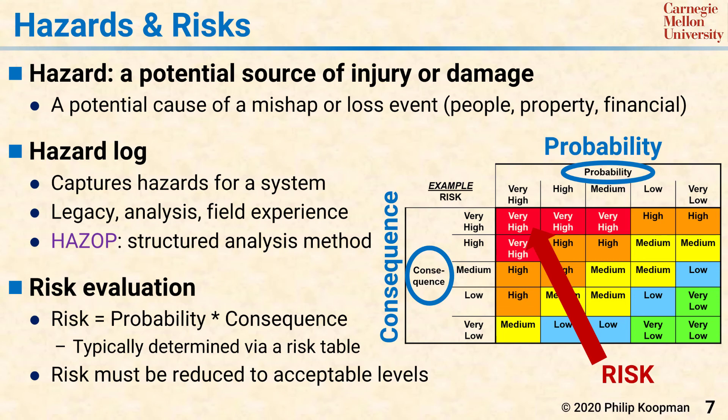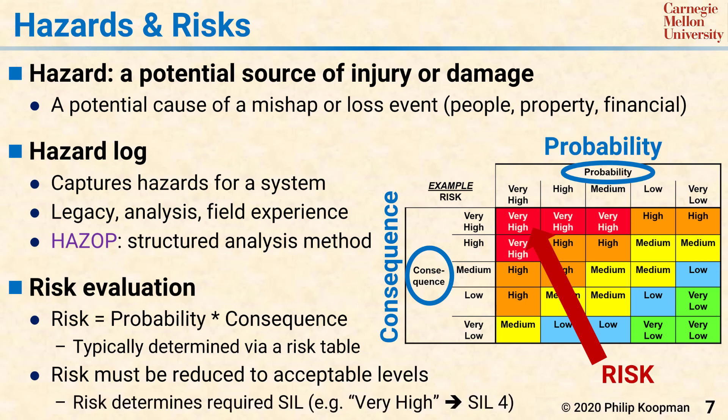But in general, the upper left of the table has the very high risks, which correspond to very high SIL requirements, while the lower right has low risks that correspond to low SILs. In this example table, a very high risk probably corresponds to SIL 4 in IEC 61508. Once a risk has been identified, that SIL stays the same even though the risk has been mitigated to an acceptably low probability.